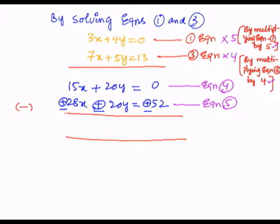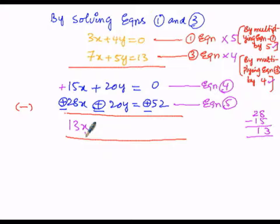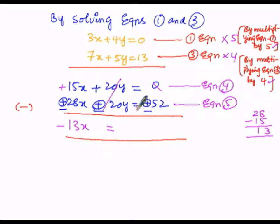To simplify further, 15x is positive and 28x is now negative, so plus of minus is minus. We subtract the greater from the lesser: 28 minus 15. 8 minus 5 is 3, 2 minus 1 is 1, giving 13x. To assess the sign, since 28 is greater than 15 and 28's sign is negative, 13x is negative. The 20y terms cancel each other out, giving 0. So we get minus 13x equals minus 52.